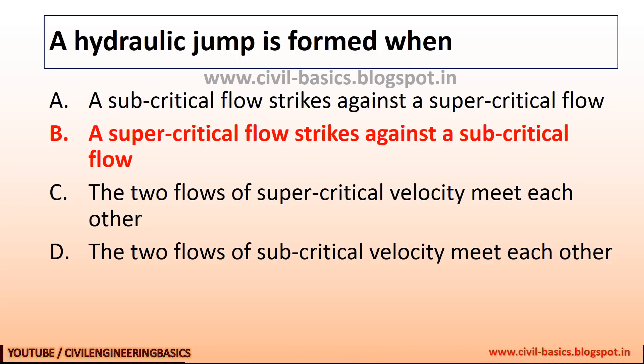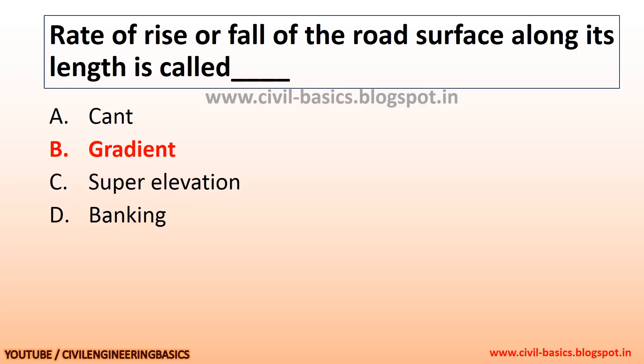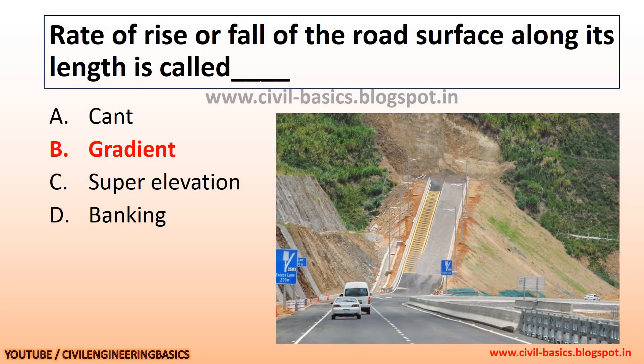A hydraulic jump is formed when a supercritical flow strikes against a subcritical flow. The rate of rise or fall of the road's surface along its length is called gradient.